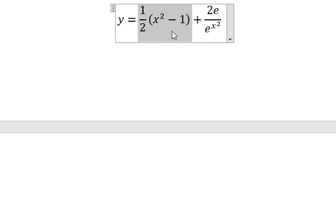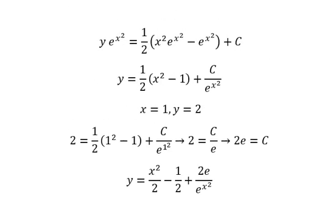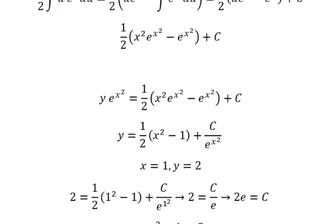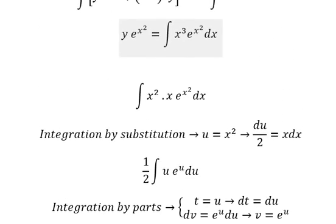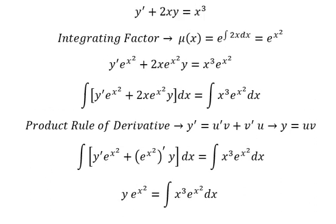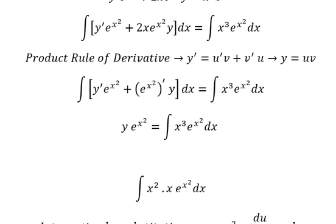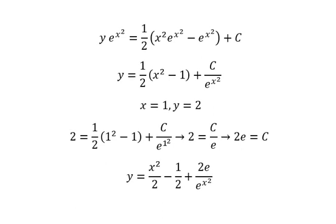Now we substitute the constant C with 2e. We can expand this and we have x squared over 2 minus 1 over 2. This is the final answer to the question. Thank you for watching. Here is the full answer to the question.